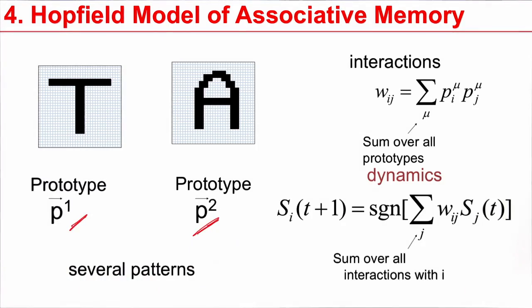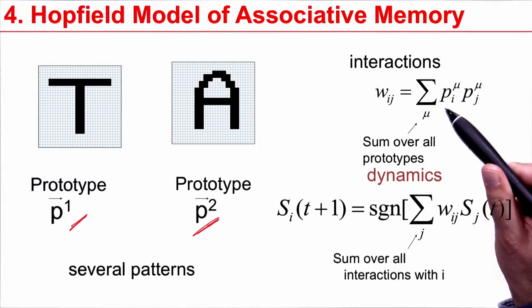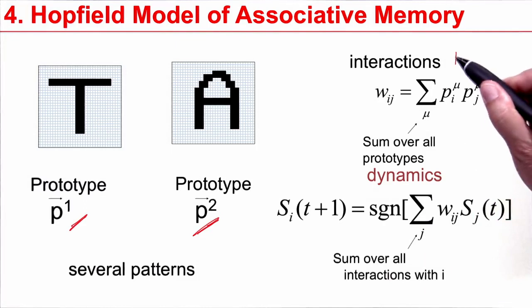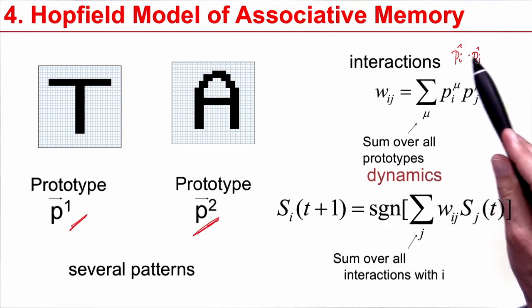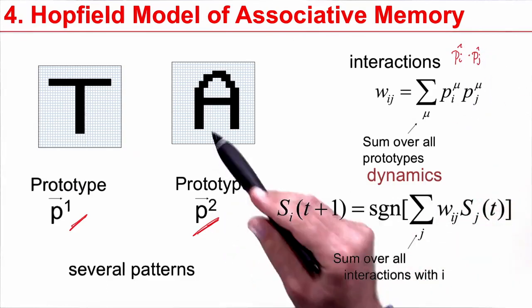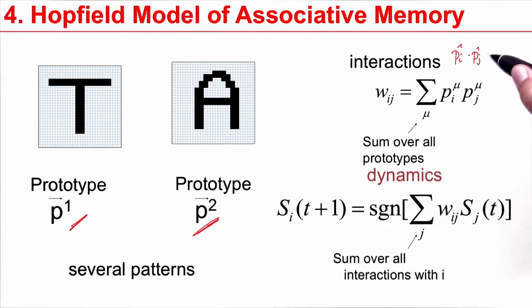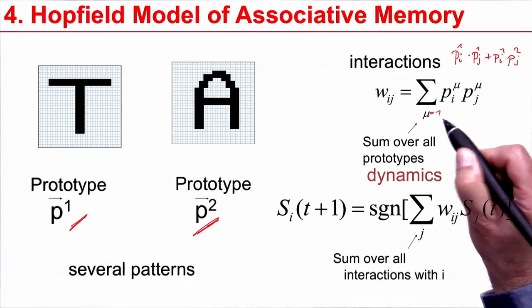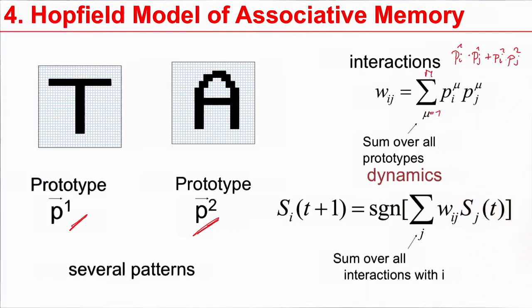The proposition is that for prototype number one, the rule would be pi times pj for prototype number one. The number of the prototype is this upper index. If I have a second prototype, let me just add the weight to the old one: plus pi2 pj2. If I have five prototypes, I would run over all possible prototypes. This is my rule for storing different patterns, different prototypes. This is how I set my weights. The dynamics remains the same as before.